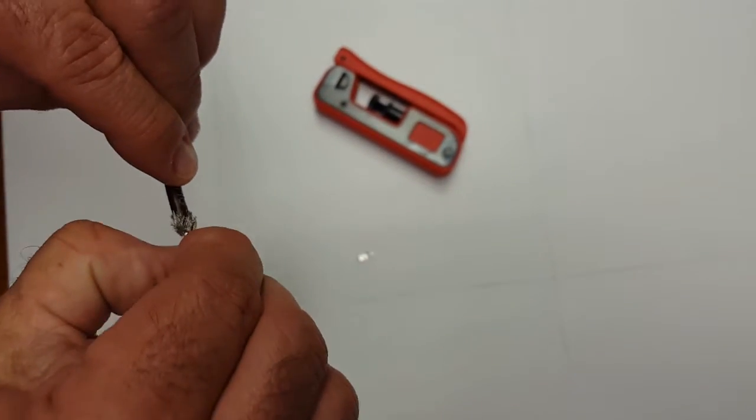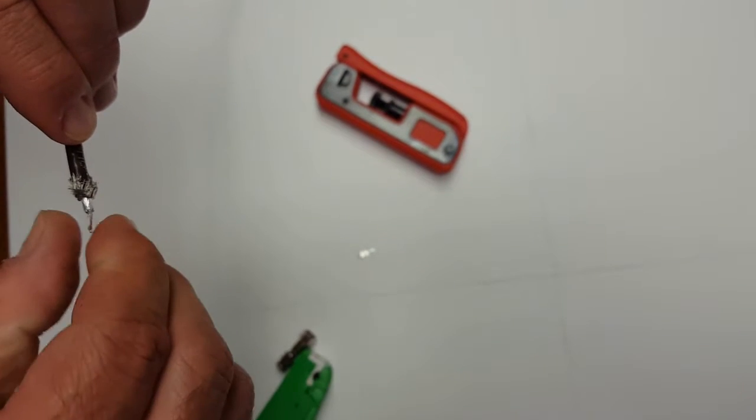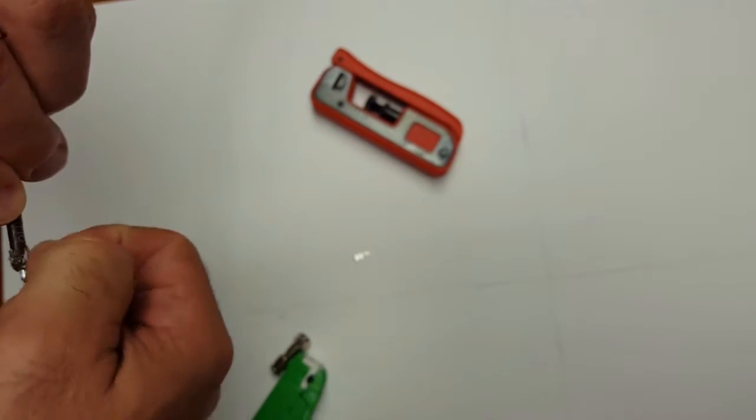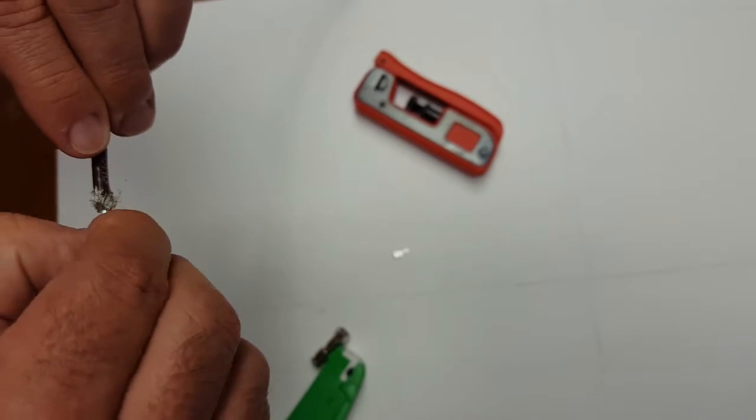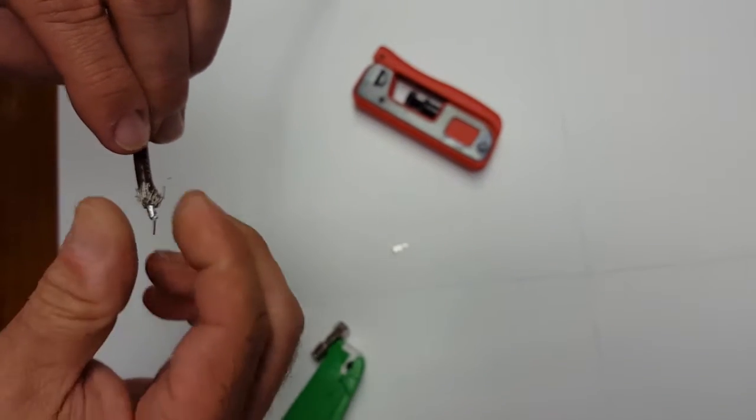And once you're all said and done, again, always good to check to make sure you have no braid wrap. Look at that, there's a couple pieces of braid that's up there. So we always make sure that those are taken off and gone before you finish terminating these connectors.